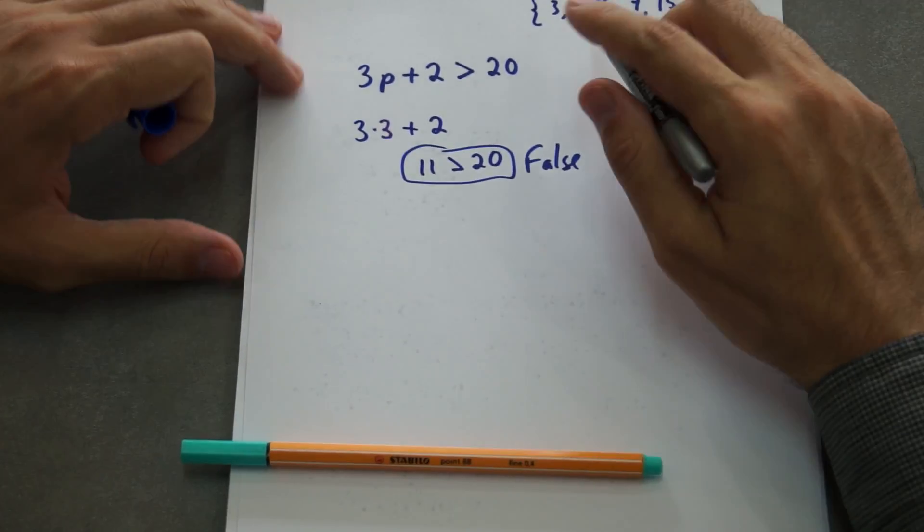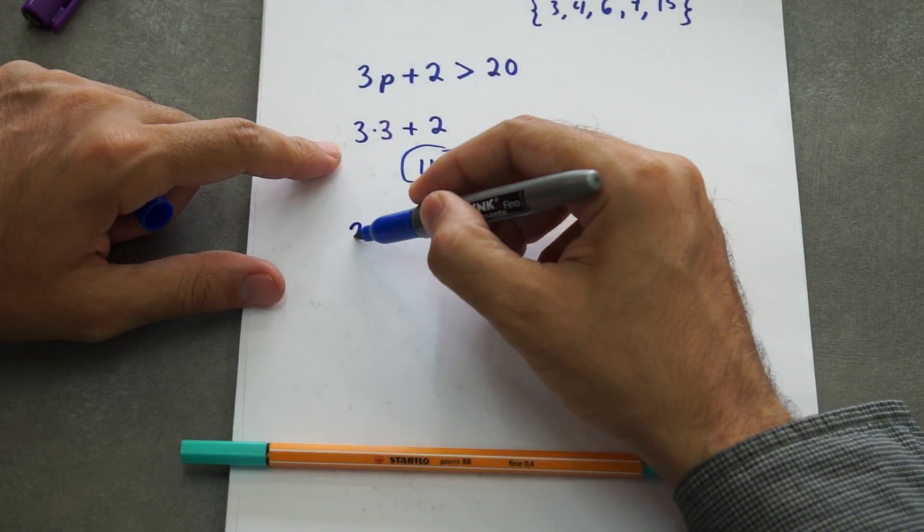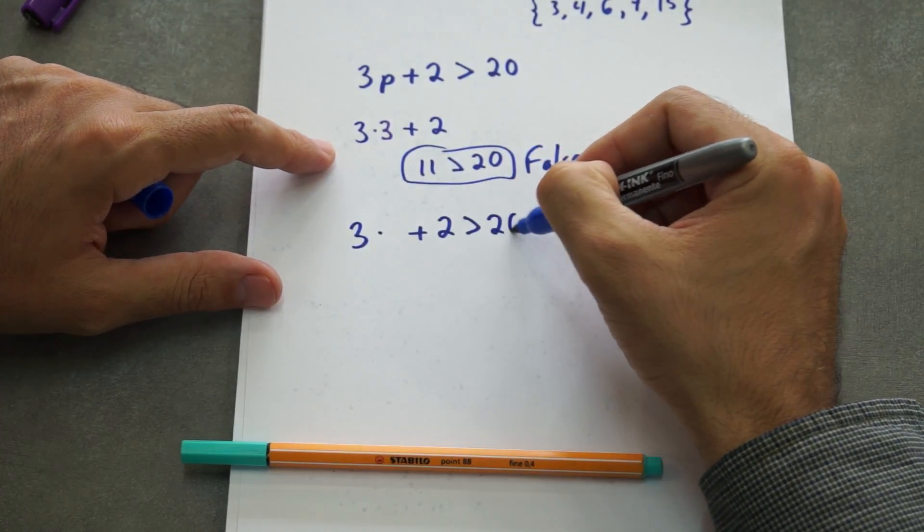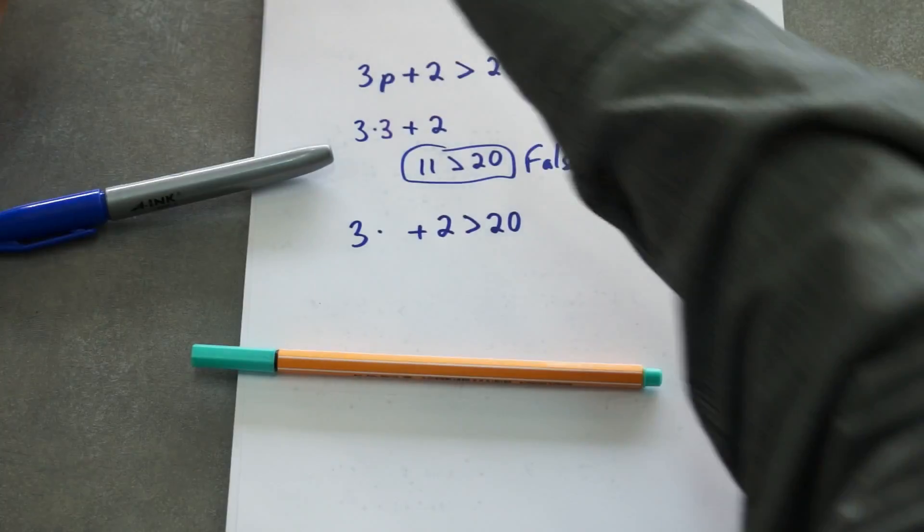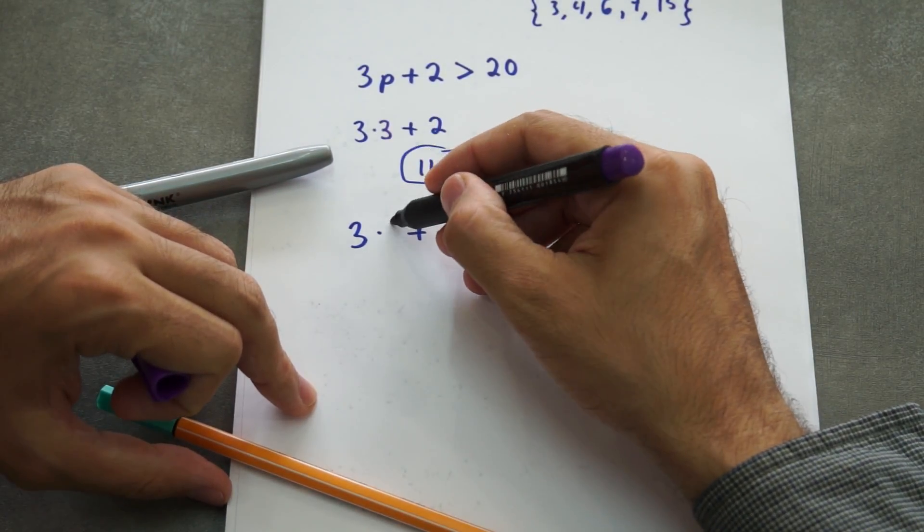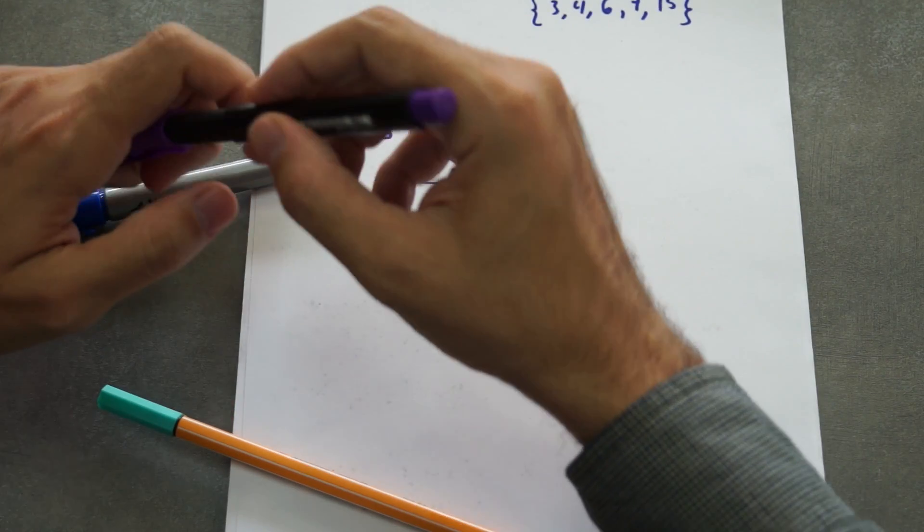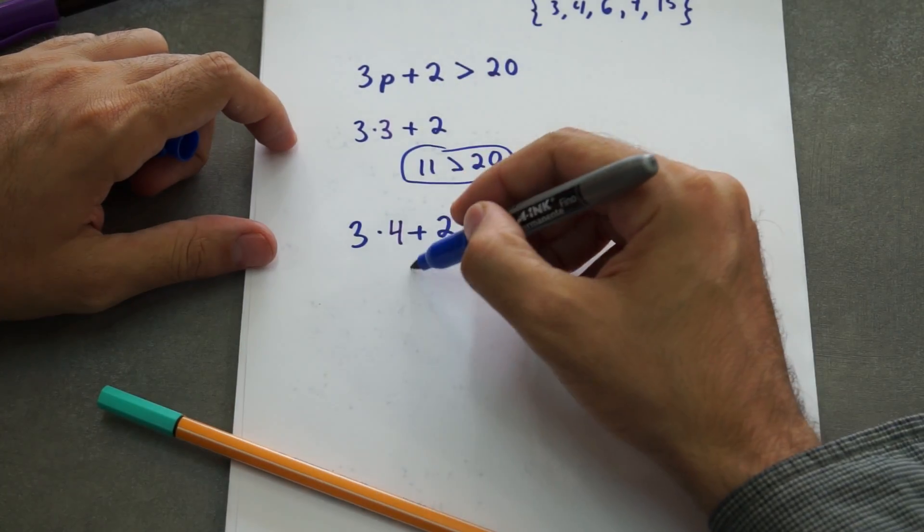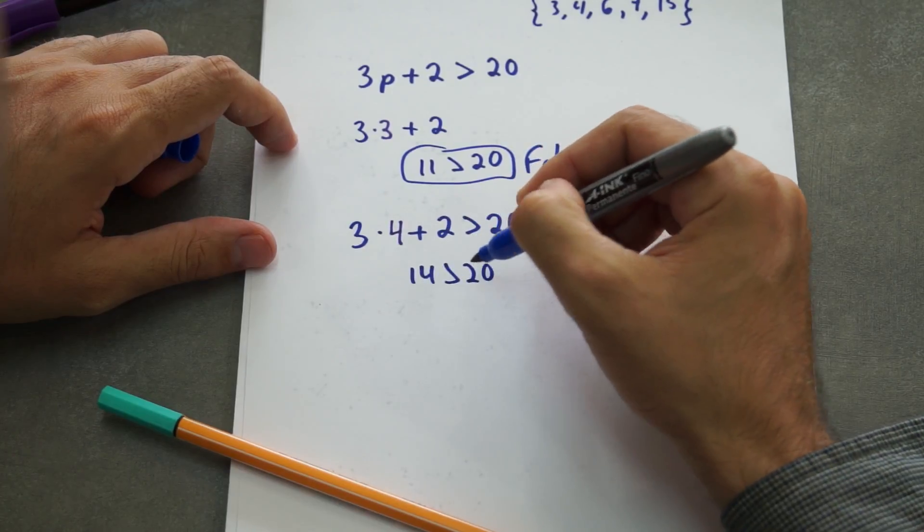So we go with another one. We try with 4. 3 times 4 plus 2 is greater than 20. So we check the second one here, times 4. 3 times 4 is 12 plus 2 is 14. 14 is not greater than 20, so it's false.